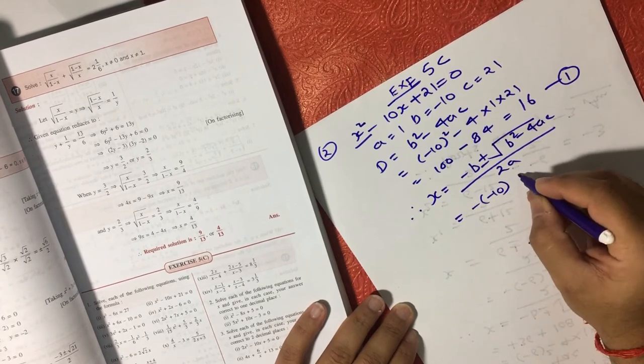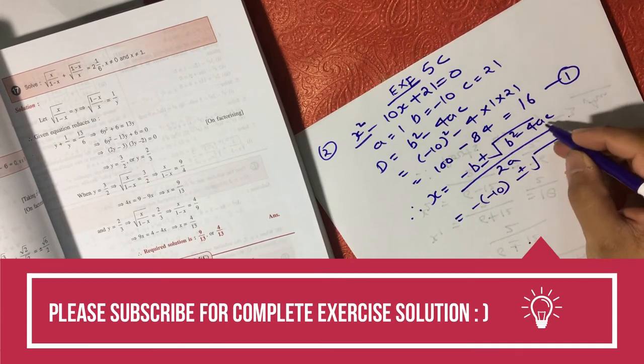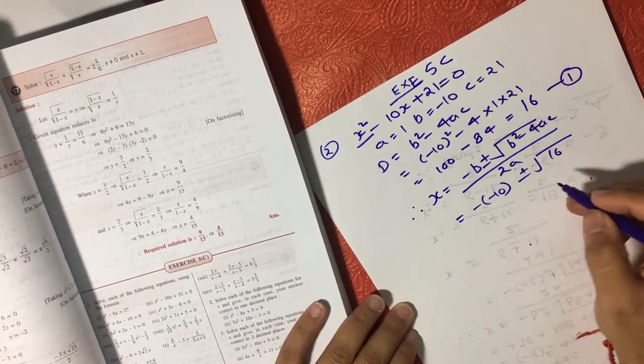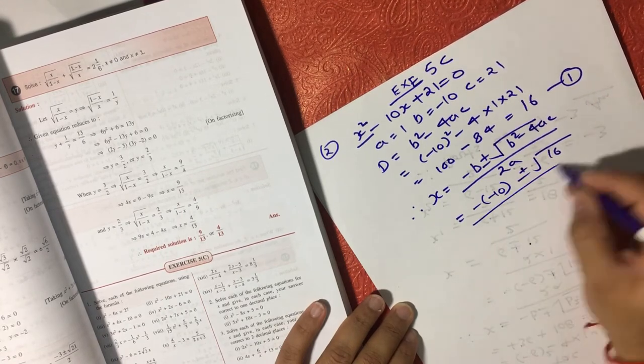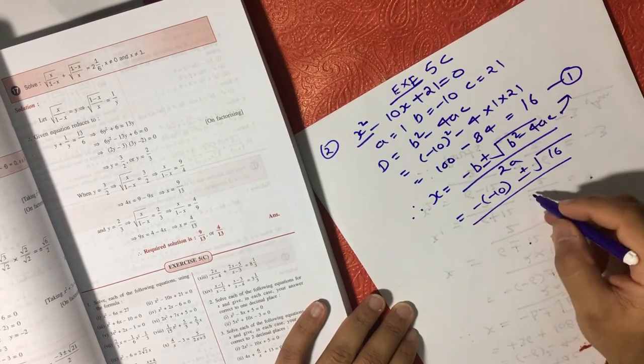We know the value of b² - 4ac. We already know the value is 16, so we can put here 16, and 2(1), a is 1 here right. Now if we solve this equation comes 10 ± √16 / 2.